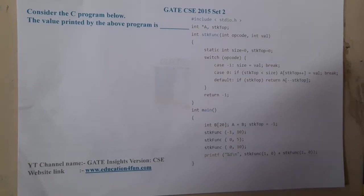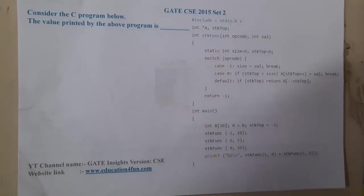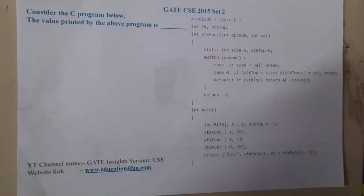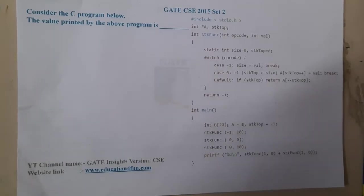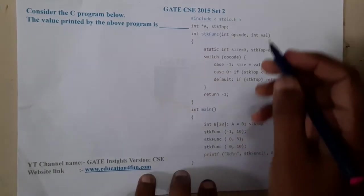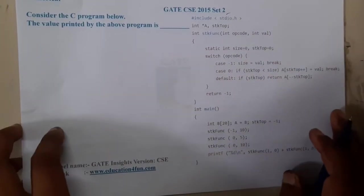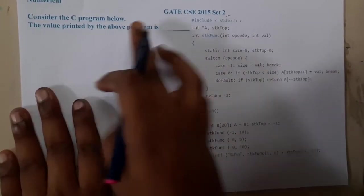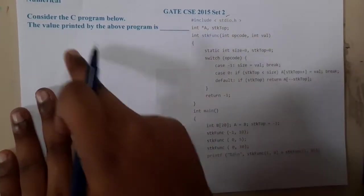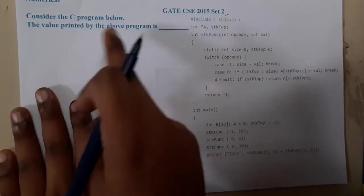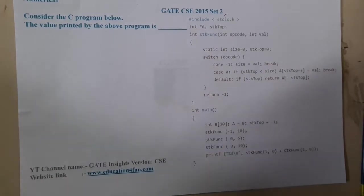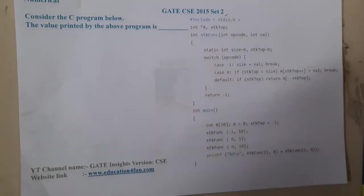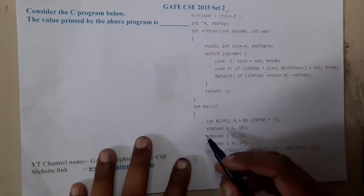Hello guys, we are back with our next lecture. This question belongs to GATE CSC 2015 Set 2. The question says to consider the C code given and asks what value will be printed by the above function — what will be the output.